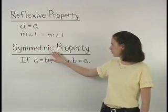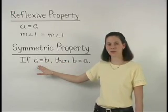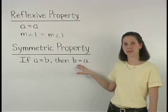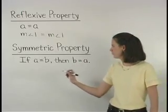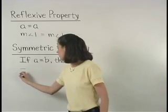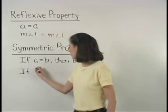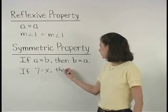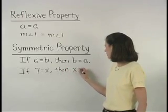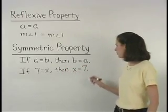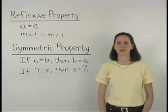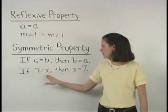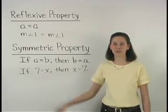The symmetric property states that if A equals B, then B equals A. For example, if we have an equation that states that 7 equals X, then we can change it to X equals 7 based on the symmetric property. So the symmetric property allows us to switch the left and right sides of an equation.